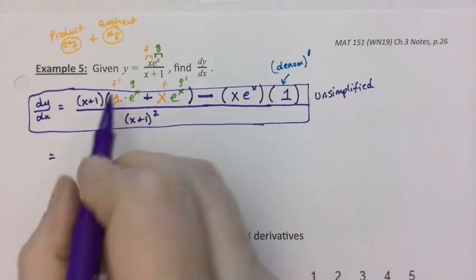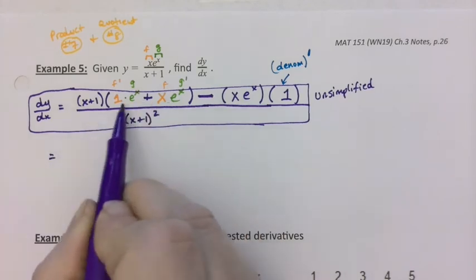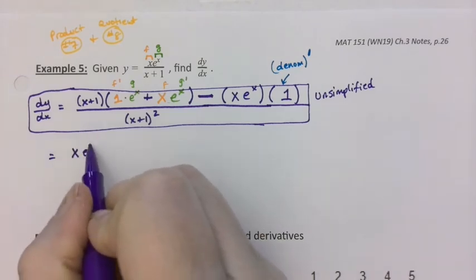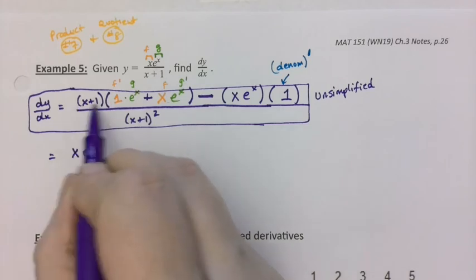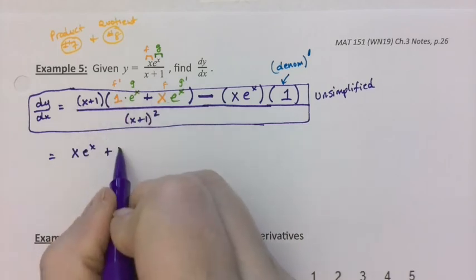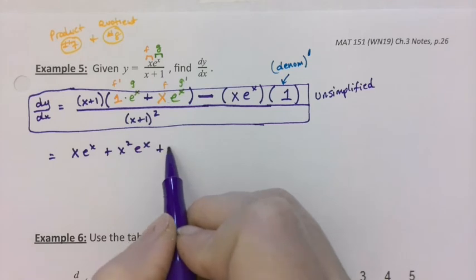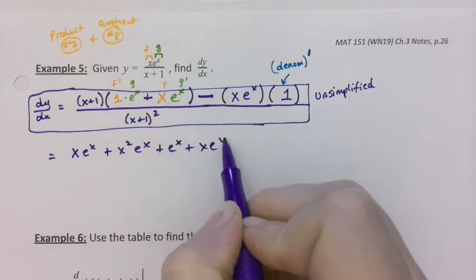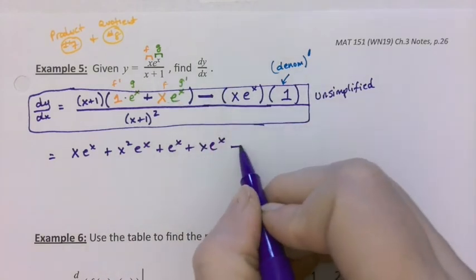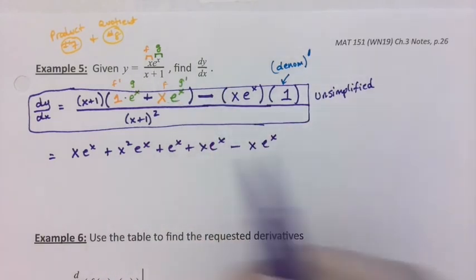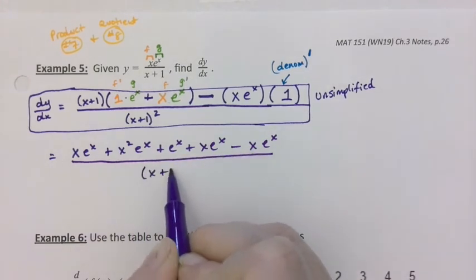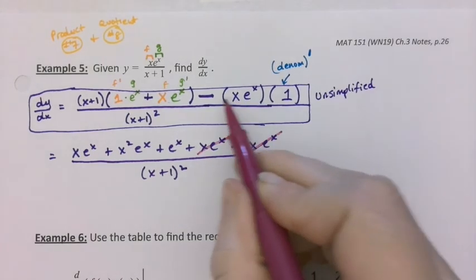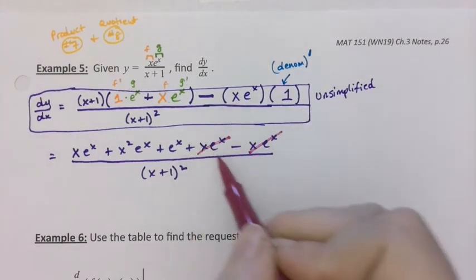But if we have to simplify it, we would have to FOIL because this is two terms. So it would be x e to the x — because x times 1 is just x — e to the x, plus x squared e to the x, plus an e to the x, plus another x e to the x for the back term. And then minus x e to the x back here, all over x plus 1 squared. But these two terms, x e to the x minus x e to the x, cancel — they subtract away to zero.